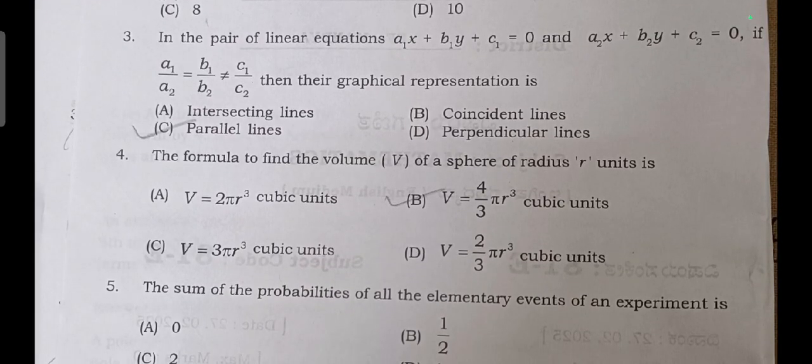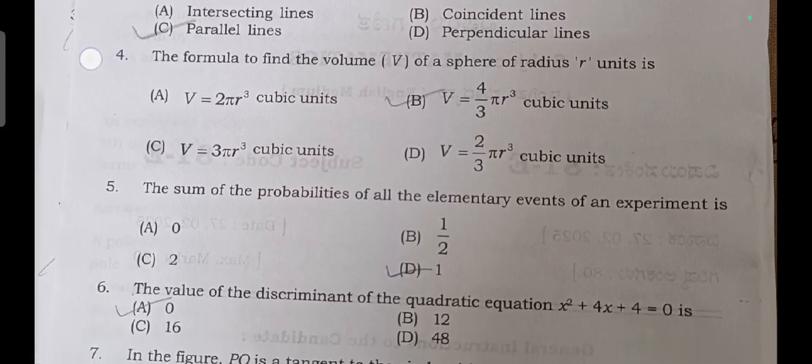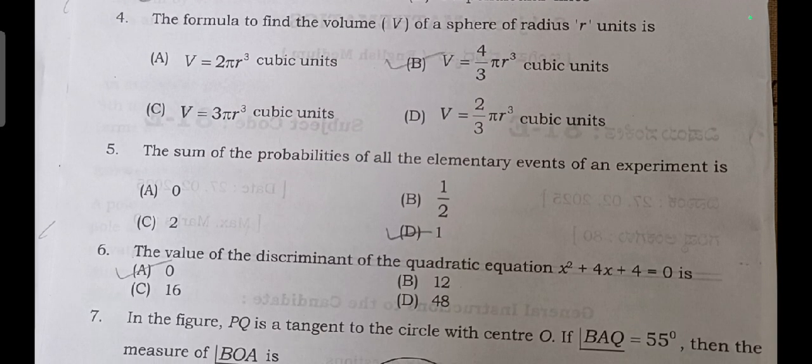The formula to find the volume of a sphere is V = 4/3 π r³ cubic units. The sum of probabilities of all elementary events of an experiment is 1. The value of discriminant of quadratic equation x² + 4x + 4 is answer: 0.